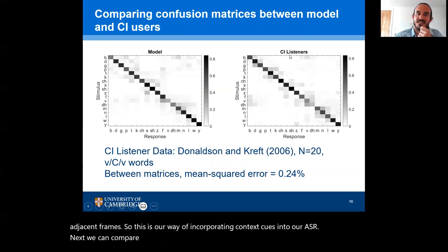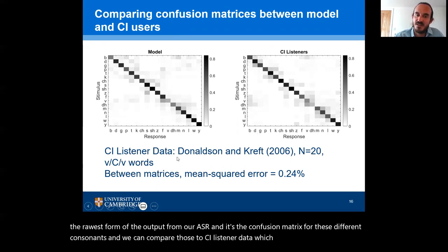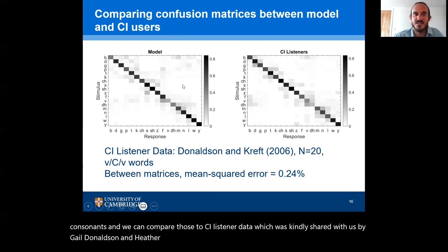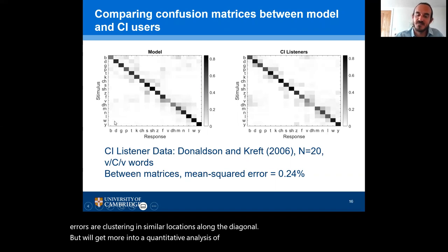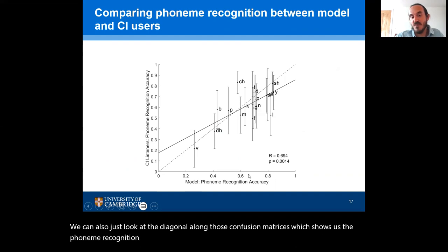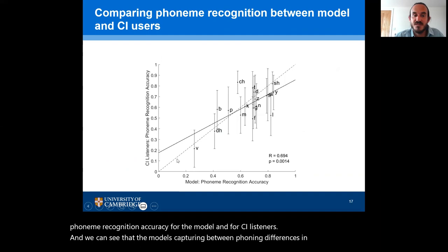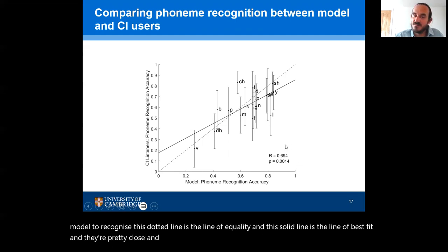We can compare the raw data between the model and the CI listeners. This is the rawest form of the output from our ASR: the confusion matrix for different consonants. We compare those to CI listener data, kindly shared with us by Gail Donaldson and Heather Kraft from 20 CI listeners. We can see qualitatively that the errors are clustering in similar locations along the diagonal. Looking at the diagonal of those confusion matrices shows us the phoneme recognition accuracy for the model and for CI listeners. The model is capturing between-phoneme differences in perceptibility — consonants that are most difficult for CI listeners are also most difficult for the model. The line of equality and the line of best fit are very close, with a solid correlation coefficient.